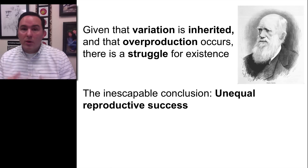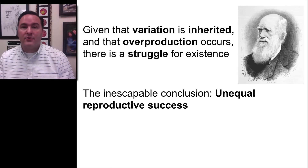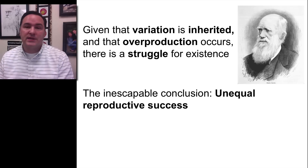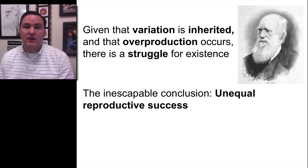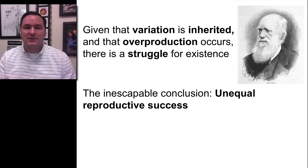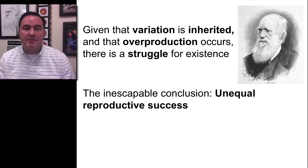Some individuals will be better off at reproducing, given their characteristics which they inherited, than other individuals in the same population. And this then causes a shift — it causes a change in characteristics over time.